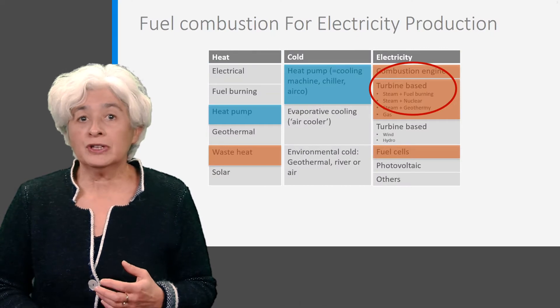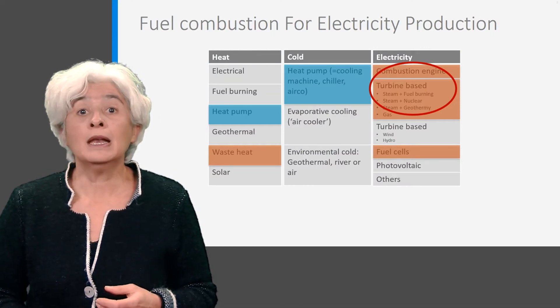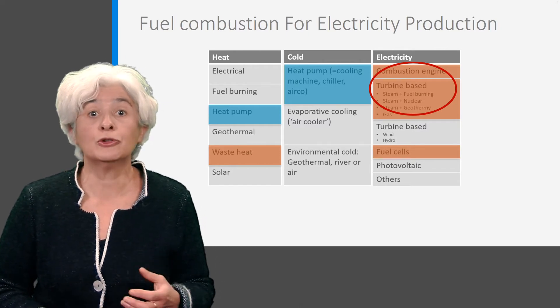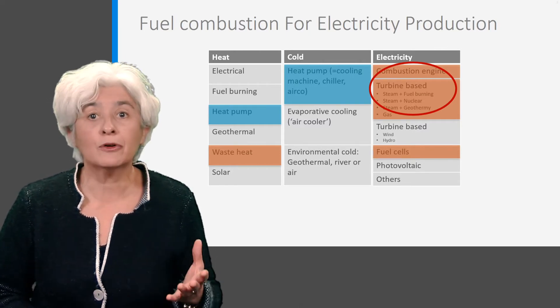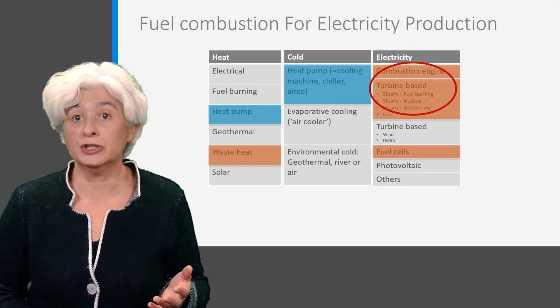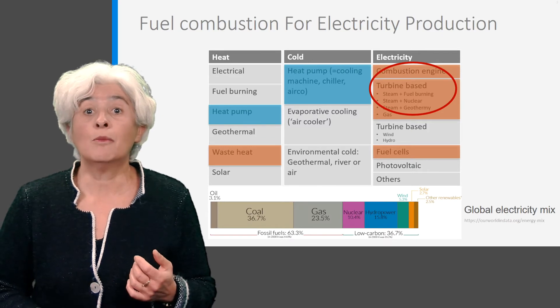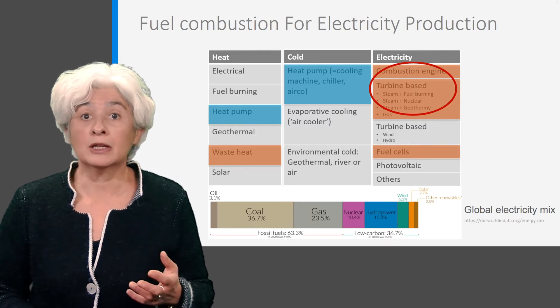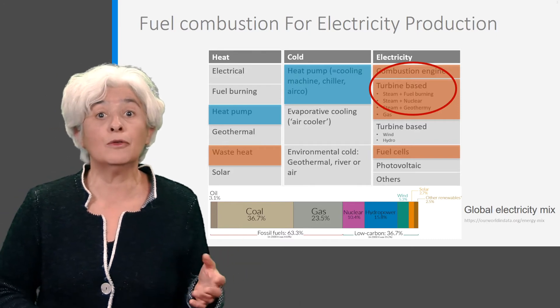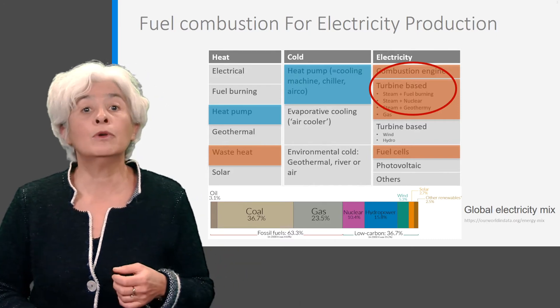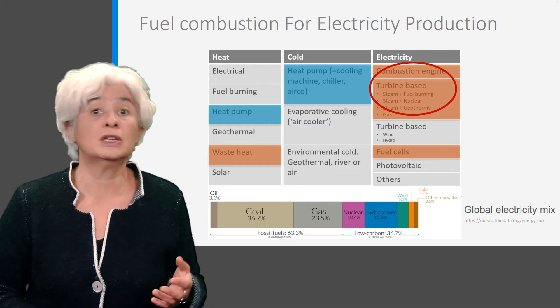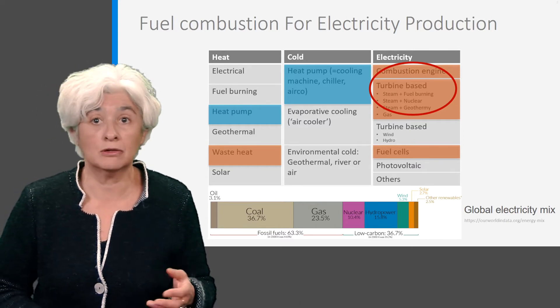This is the first lecture about electricity production, and it will be mainly about how hot gases or steam produced by the combustion of fuels are the drivers of electricity production. Of course, we want to get rid of fossil fuel systems, but as they cover more than 60% of all electricity production, it is relevant to have some understanding of the processes involved. And we will also see that the fossil fuels used may be replaced by more sustainable resources like biogas or biomass.